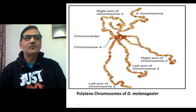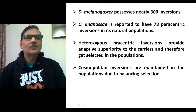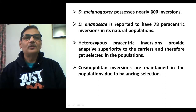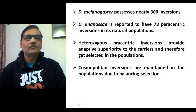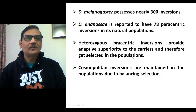A number of species of Drosophila have been used for studying chromosomal polymorphism. Drosophila melanogaster is one of the polymorphic species of this genus and possesses nearly 300 inversions reported from different parts of the world. Some of them are cosmopolitan inversions. So far 78 paracentric inversions have been reported from different natural populations. Heterozygous paracentric inversions provide adaptive superiority to individuals who carry them, and therefore such inversions are selected in the populations.